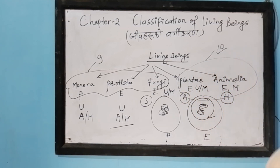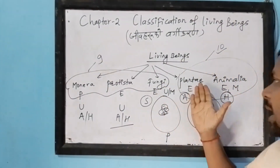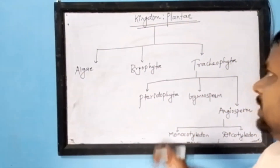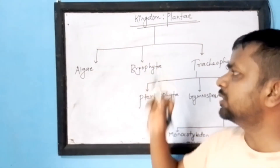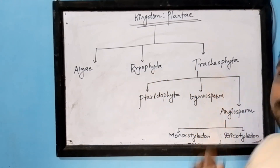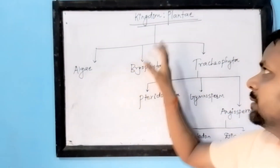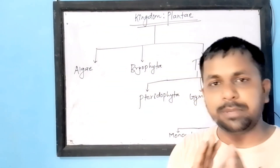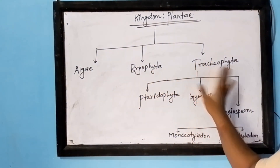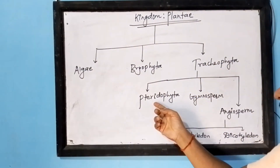This is what we have to study in class 10. Now let us start with the Kingdom Plantae. The Kingdom Plantae is further subdivided into three divisions: Algae, Bryophyta, and Tracheophyta. All plants are grouped into these three branches: Algae, Bryophyta, and Tracheophyta.